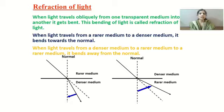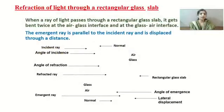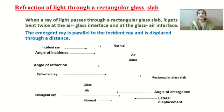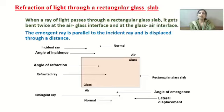Now, refraction of light through a rectangular glass slab — this is an activity we are going to perform in our physics laboratory. When the ray of light passes through a rectangular glass slab, it gets bent twice: at the air-glass interface and the glass-air interface. An interface is the place where the two media interact. If there were no glass slab, the ray of light would have traveled straight.